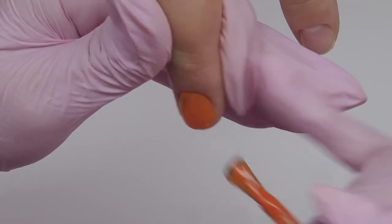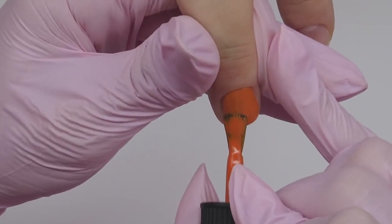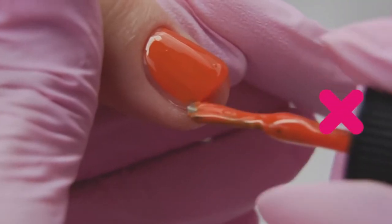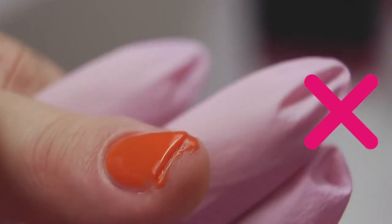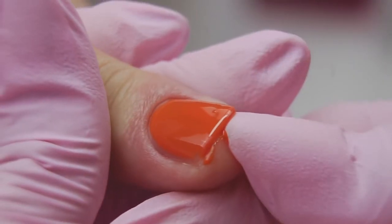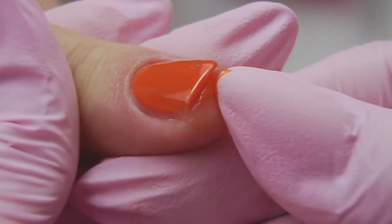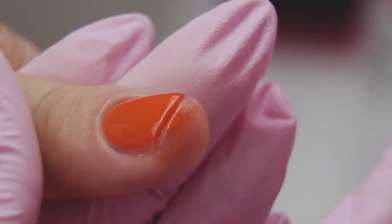At this stage, nail techs often seal the free edge, fanning the brush like this. And it gets on the nail fault. The techs start fixing this with their fingers in the gloves. And it all gets smeared all over the skin.